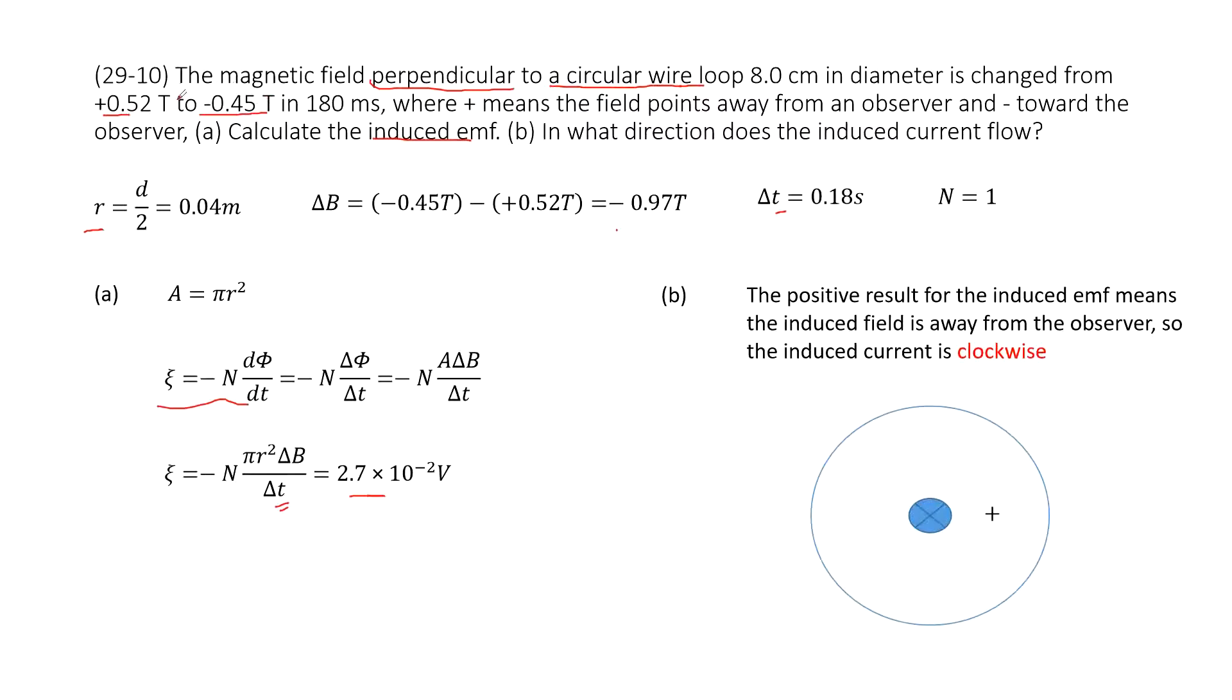And then we can see this magnetic field decreases and goes in the opposite direction. That means when it decreases, when we want to compensate it, the induced current will produce magnetic field that still flows in. It is pointing inward.